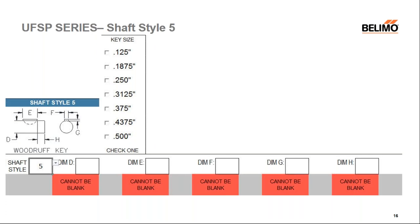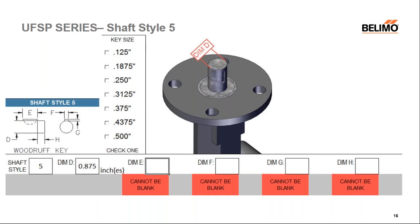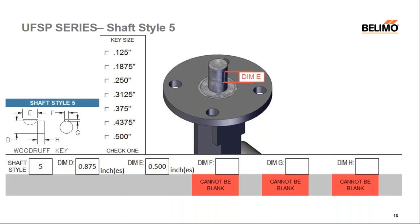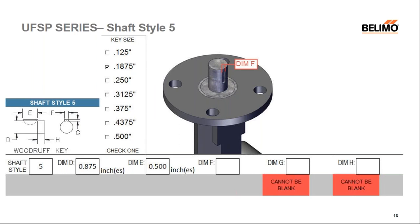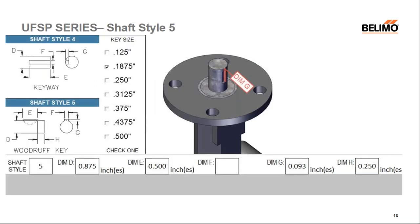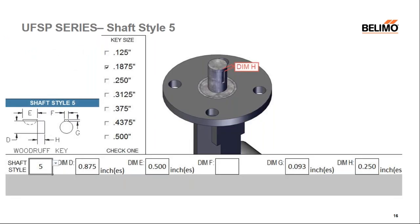Shaft style five is also a key, but a Woodruff key. Dimension D is the diameter of the shaft, dimension E is the length of the key way, dimension F is the width of the key way — filled in here by checking the key size box rather than writing a value. Dimension G is the depth of the key, and dimension H is from the top of the shaft to where the key way begins.